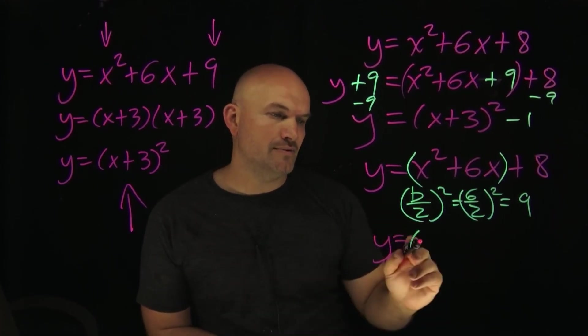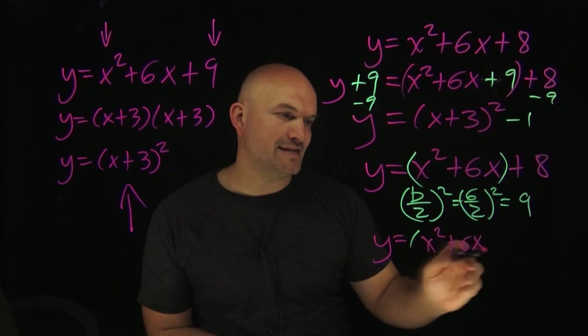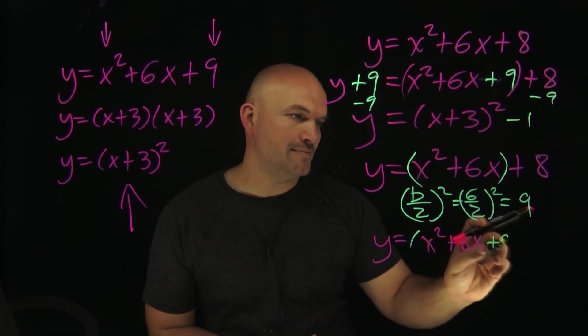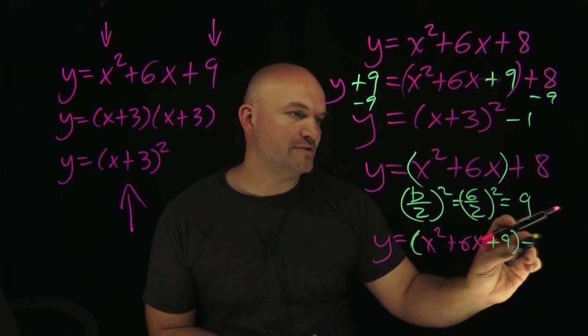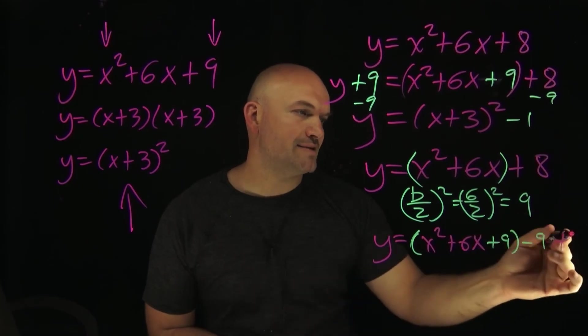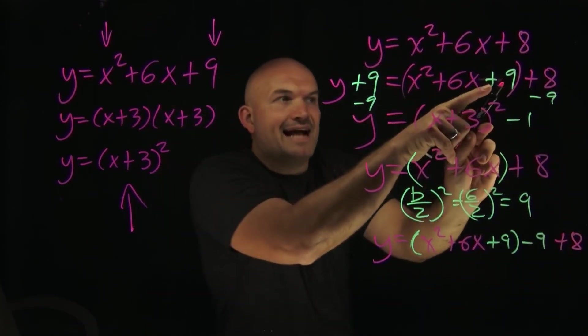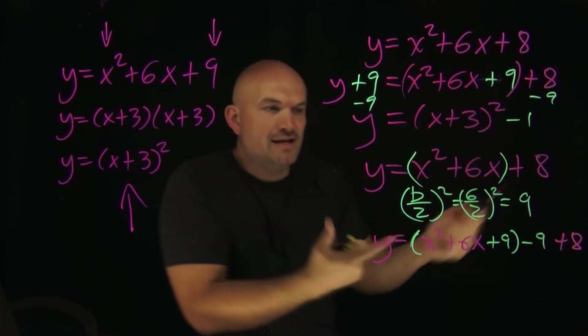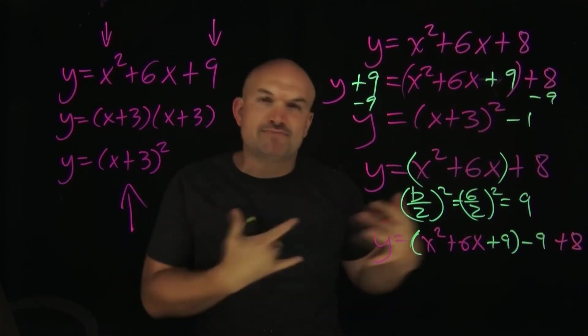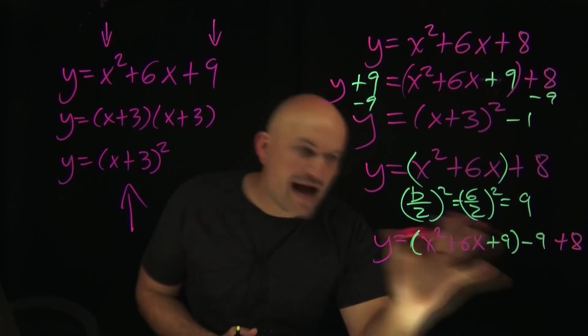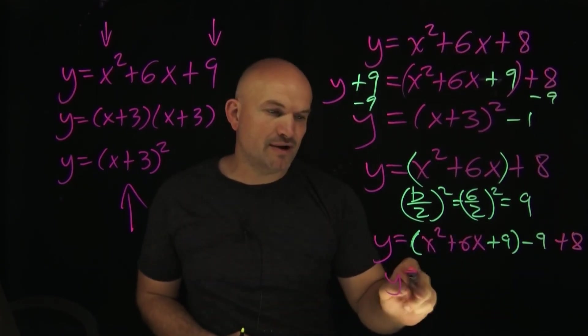So I have y is equal to x² plus 6x. We're going to do a plus 9, and then we're gonna do a minus 9, and then plus 8. Because isn't that exactly what happened anyways? I had to add the 9, then I had to subtract the 9 anyways, so this is just making this process go by much quicker. And now I have created my perfect square trinomial so I can go ahead and factor it down.